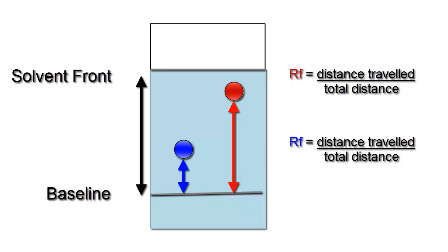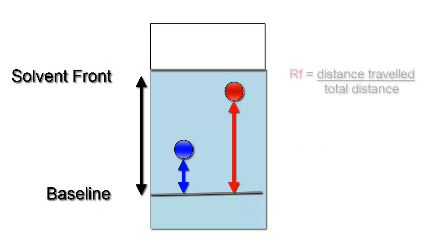All RF values should be between 0 and 1. So, for instance, an RF of 0.5 means that the spot has traveled about halfway up the plate, whereas an RF value of 0.75 would indicate that the spot has traveled three quarters of the way up the plate.